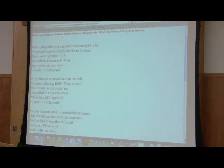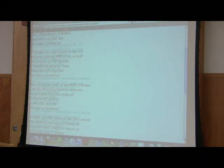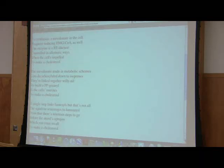The mevalonate made in metabolic schemes gets decarboxylated down to isoprenes. They're linked together willy-nilly to build a PP geranyl in the cell's routines to make a cholesterol. A single step links farnesyls, but that's not all. The squalene rearranges to lanosterol. From that there's 19 steps to go before the sterol's apropos, which you must recall to make a cholesterol.